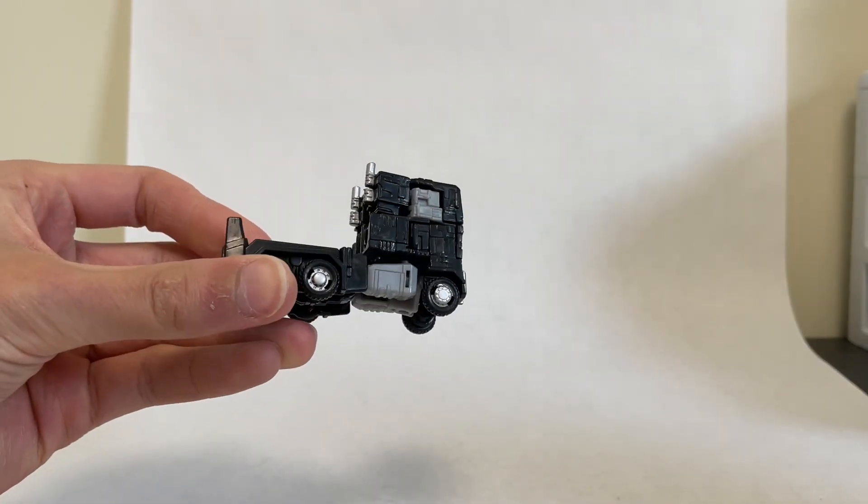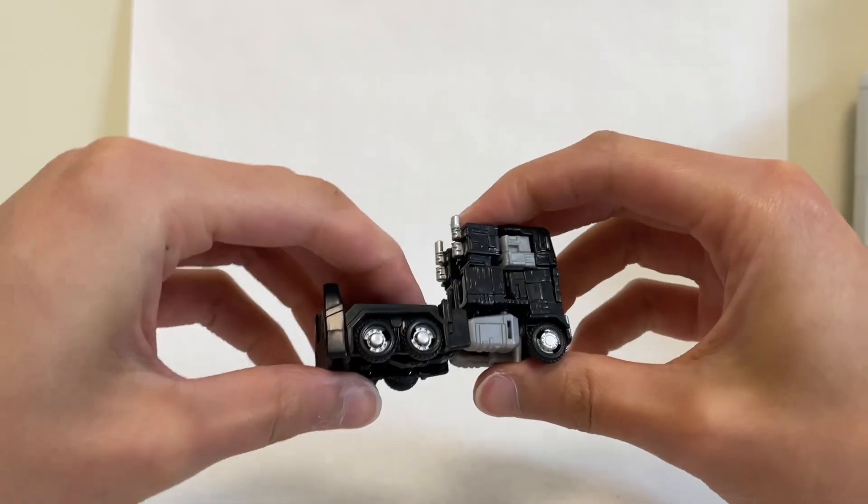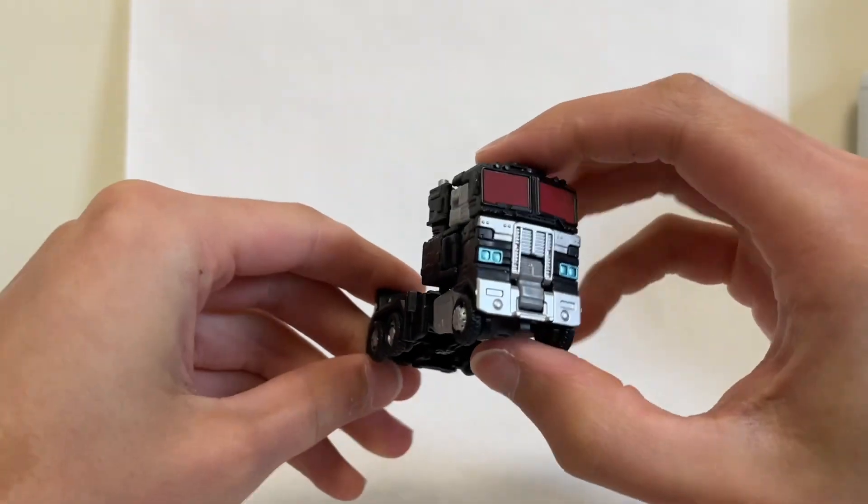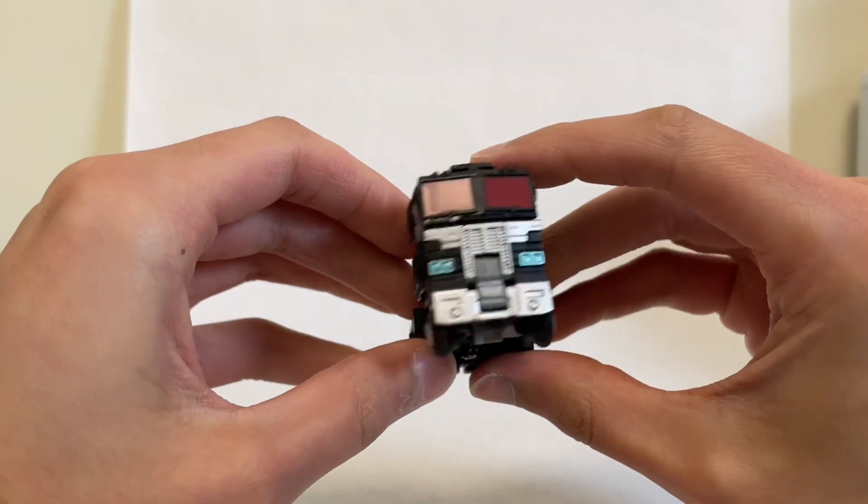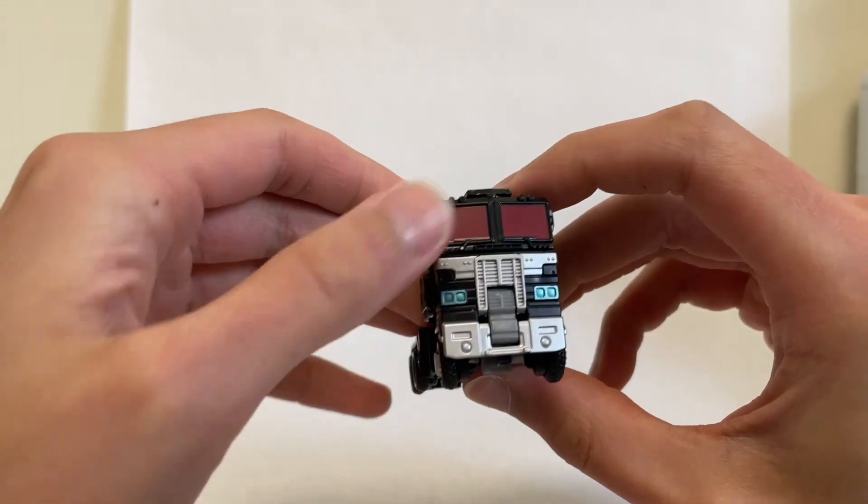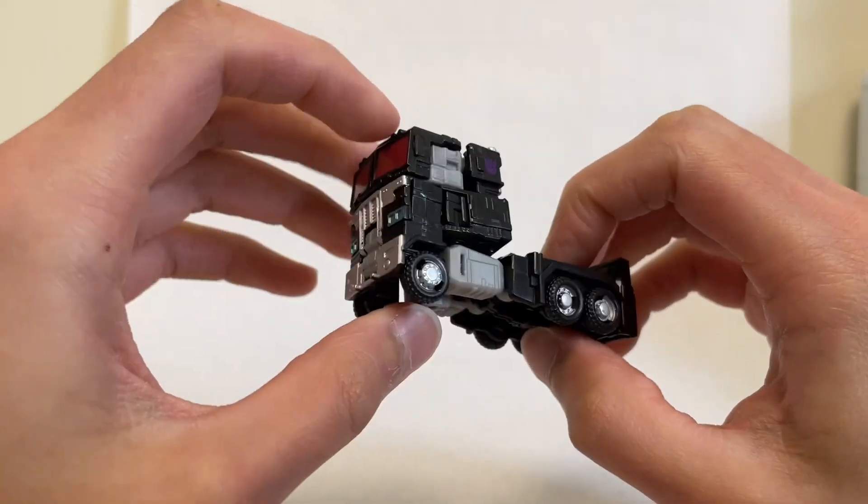And here he is all transformed into his flat fronted semi truck. Looks really good. See all the paint apps now on the front of the truck. Looks really good. I like the blue for the headlights. Lots of nice silver paint on the front. The red windshields look great.